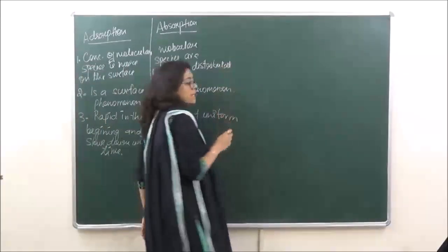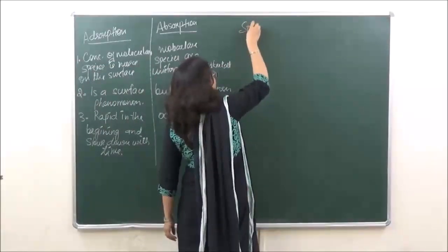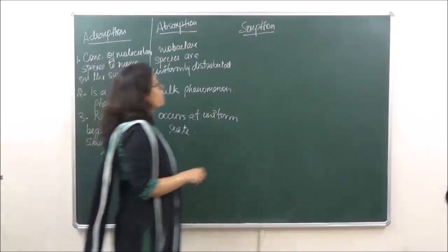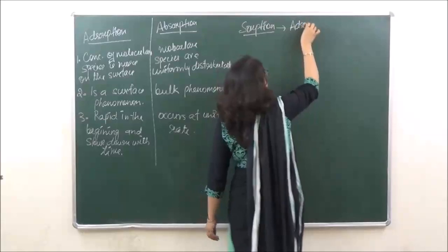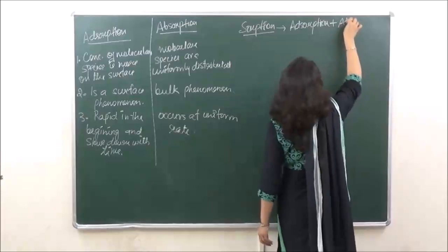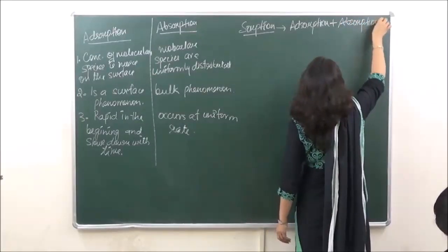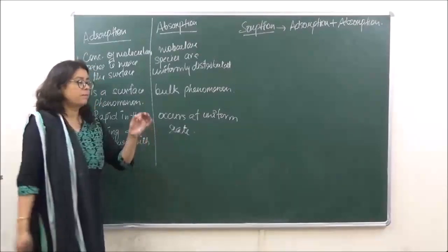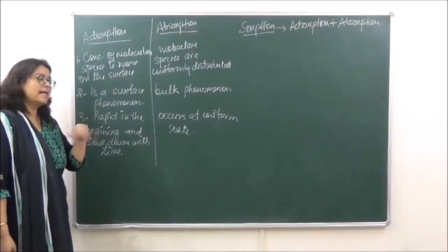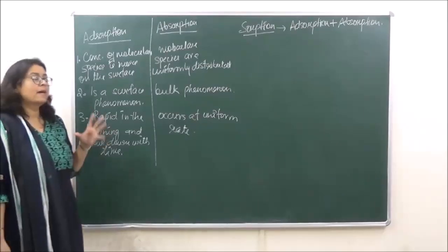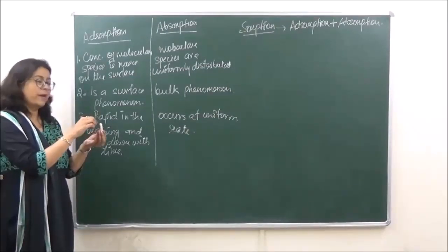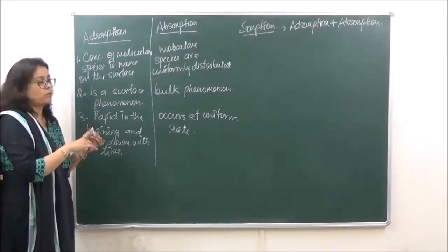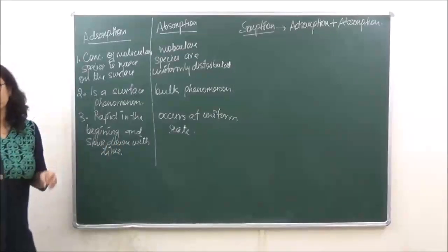Sometimes both adsorption and absorption take place simultaneously. Such a process is known as sorption. For example, if we dip a piece of chalk in ink and take it out, the ink is adsorbed on the surface making it blue. But when you break the chalk, it is wet from inside but there are no ink marks visible inside — so both adsorption and absorption are taking place simultaneously. That is sorption.